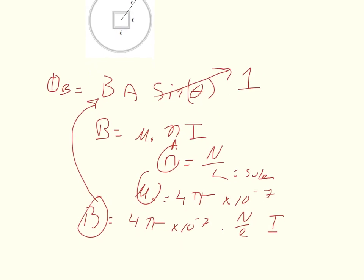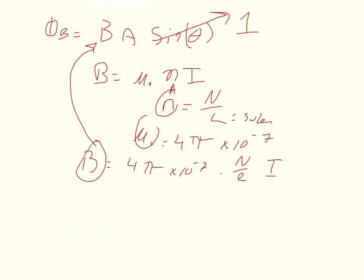The other variable is area. And so the area for a square is equal to the length of the square squared. Just keep in mind that this L is different from the solenoid L. Also be sure to remember to convert both of your L's into SI units.